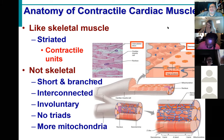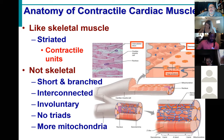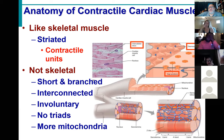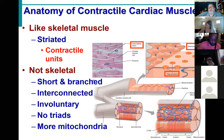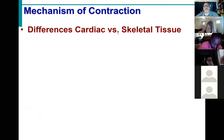Being highly oxygen-dependent, these cells rely almost exclusively on aerobic respiration to produce their ATP. We don't want lactic acid building up, so we avoid relying solely on glycolysis. That's why 20% of the blood goes to the heart, and why cardiac cells have a massive number of mitochondria — to produce all the ATP aerobically without producing lactic acid.